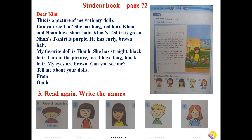Now read again and write the names. Các con bây giờ đọc lại bài đọc, sau đó viết tên các bạn vào xuống dưới. Picture one: he has short hair and his t-shirt is purple — who's he? He's Nhân. Cậu ấy có mái tóc ngắn và áo thun màu tím — đó là Nhân. Các con đọc kỹ bài đọc, tìm thông tin và viết tên các bạn cho number 2, 3, 4, and 5. Hãy cho cô biết Kim là bạn nào. Lấy bút ra và hoàn thành phần này.